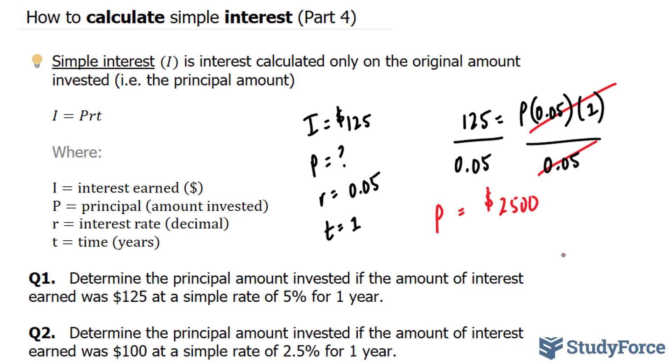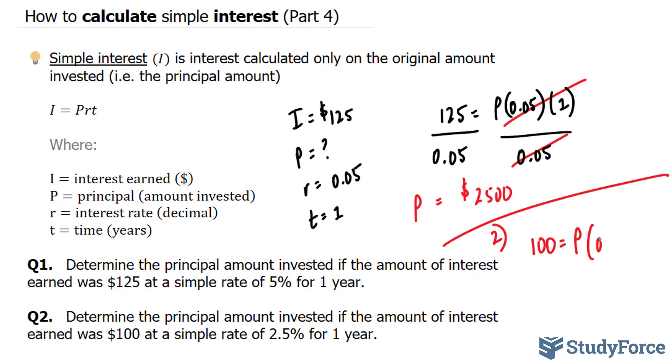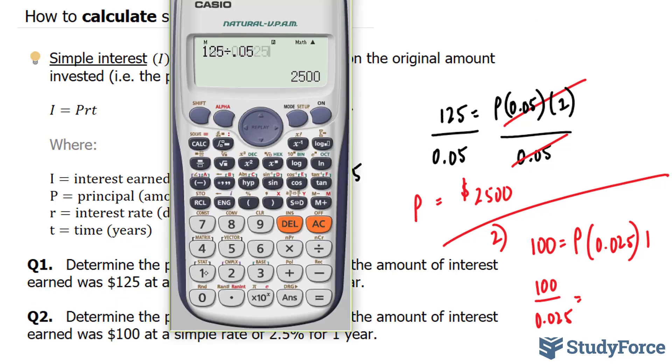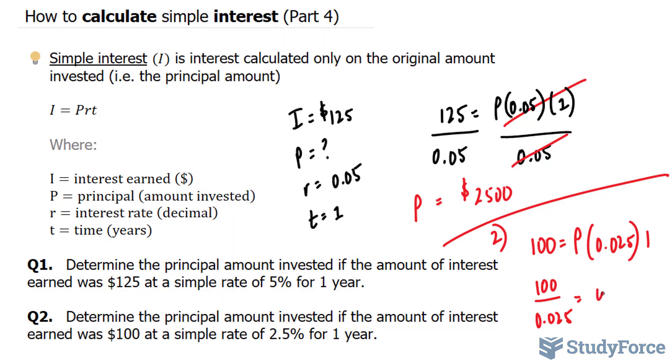So I'm going to do the same thing as before. The amount earned was $100, the p, in our case, is something that we are looking for, so this is question 2, not to be confused, times 0.025 as our interest, times 1. Dividing both sides now by 0.025, using the same method as before, gives us $4,000. So $4,000 was initially invested by this person in question 2.